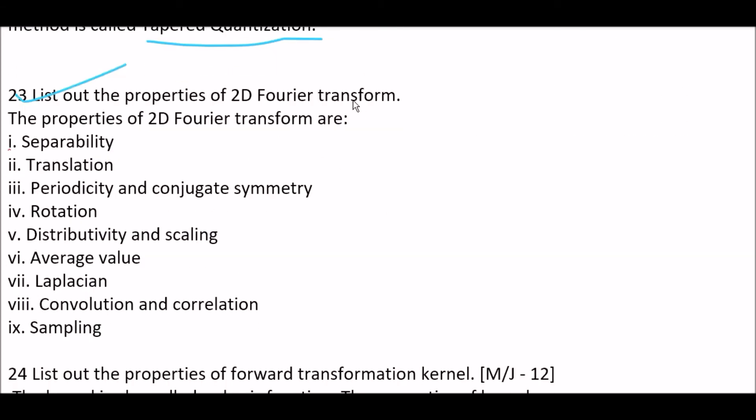Next question. List out the properties of 2D Fourier transformation. They are the properties of two-dimensional Fourier transformation. First one, separability. Next one, translation. Third one, periodicity and conjugate symmetry. Next one, rotation. Next one, distributivity and scaling. Next one, average value. Next one, Laplacian. Next one, convolution and correlation. And next one is sampling. So, there are nine properties of 2D Fourier transformation.